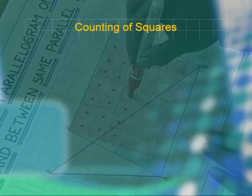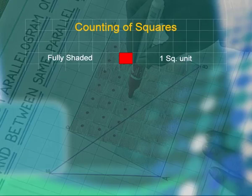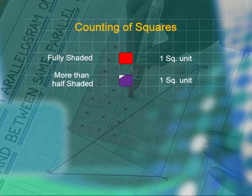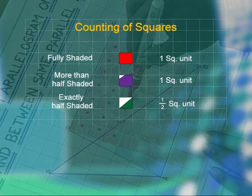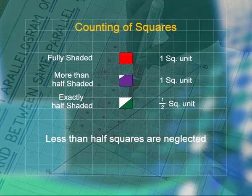For counting the squares we use this procedure: the area of a fully shaded square is considered as one square unit; the area of more than half shaded squares is also considered as one square unit; squares that are exactly half shaded are considered as half square units; and the area of squares which are less than half shaded are neglected.